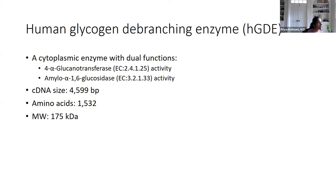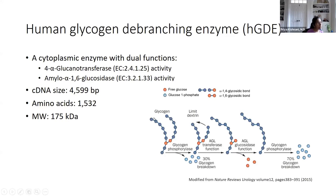Debranching enzyme is very unique in that it has two functions: one is to transfer glucose molecules, and the second is to break the branch point of glycogen. This is the structure of glycogen — each circle is glucose 1-phosphate. Glycogen is broken down by two enzymes: glycogen phosphorylase, which when deficient in the liver causes GSD type 6, and when deficient in muscle causes type 5. Phosphorylase breaks the outer branches and accounts for about 30% of glycogen breakdown, while the remaining 70% is the job of debranching enzyme.